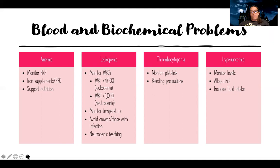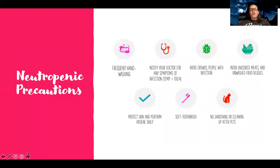They can also have hyperuricemia — high uric acid levels. I want to monitor those levels, and if they are high, I can give things like allopurinol, similar to treating gout, and also increase their fluid intake to dilute the excess uric acid.